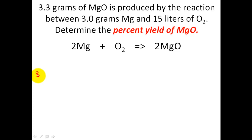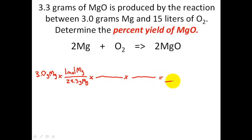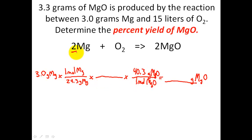I'll write my givens out now. My given is 3.0 grams of magnesium. Starting with one mole of magnesium — that's 24.3 grams of magnesium — I want to find out how many grams of magnesium oxide I should have made theoretically. Grams of magnesium oxide go on top, using 40.3 grams per one mole of MgO from the periodic table. From the balanced equation, I have two moles of magnesium for every two moles of MgO. If I use up all of my 3 grams of magnesium, the question is: how many grams of MgO should I produce? Let's calculate.